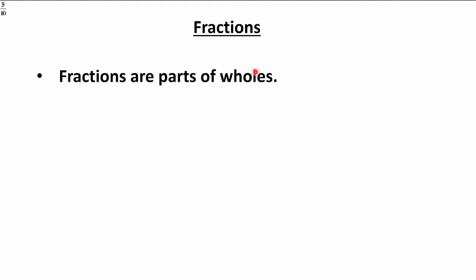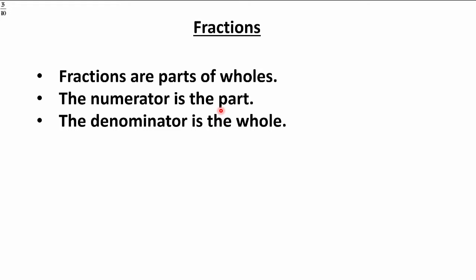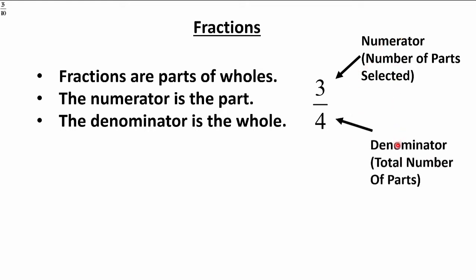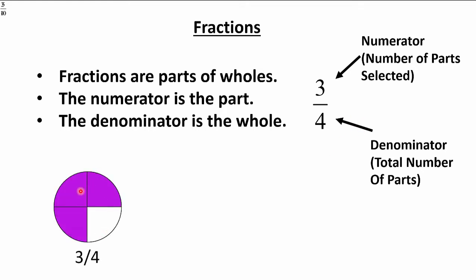Let's start with fractions and what they mean. Fractions are parts of wholes. We've got a numerator — the top number — which represents the part. The denominator represents the whole; it means four pieces in total and we're going to color three of them. The denominator means four equal pieces, so you select three of them and you've got three-fourths. That's the proper way to say it — three-fourths, or three-quarters.